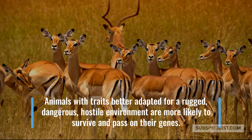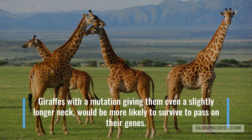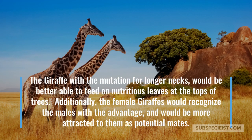Animals with traits better adapted for a rugged, dangerous, hostile environment are more likely to survive and pass on their genes. An animal of prey with even a slight advantage in traits better adapted for survival is more apt to pass on their genes. Giraffes with a mutation giving them even a slightly longer neck will be more likely to survive to pass on their genes. The giraffe with the mutation for longer necks would be better able to feed on nutritious leaves at the tops of trees. Additionally, female giraffes would recognize the males with the advantage and would be more attracted to them as potential mates.